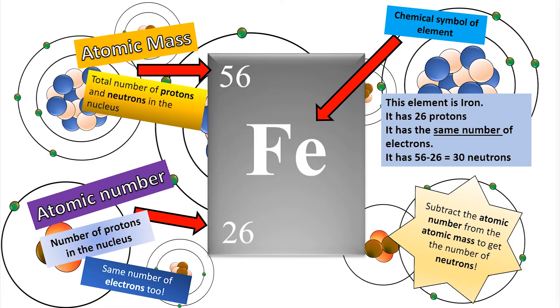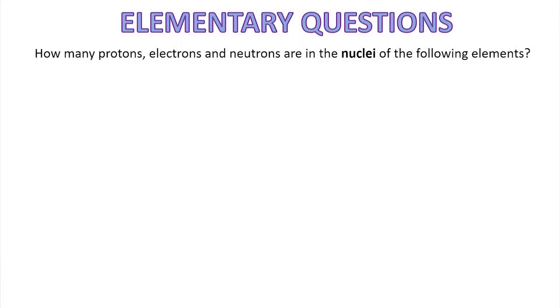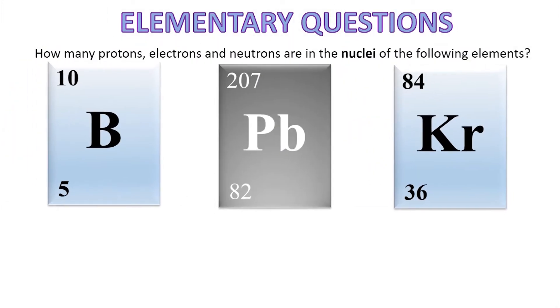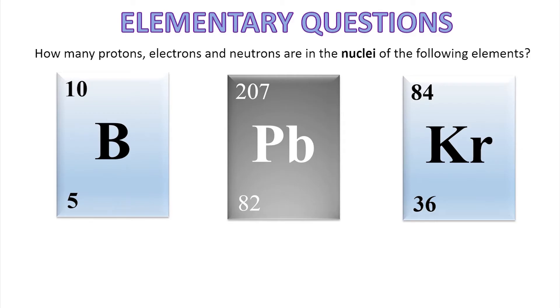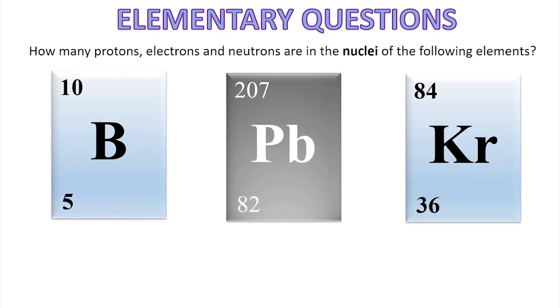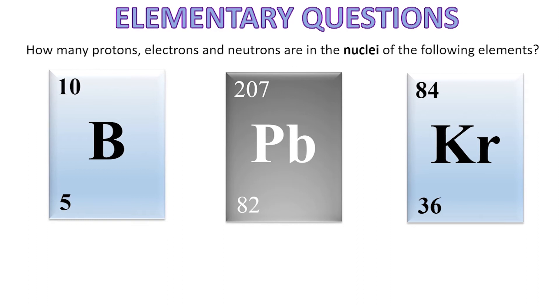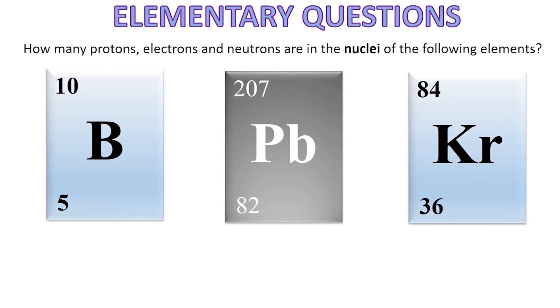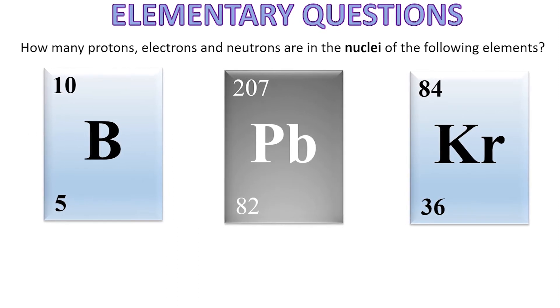Right, here's a check for me paying attention, because you probably haven't. There's some other elements. You don't need to know their names. The Pb in the middle is lead, and Kr's krypton. B is boron. But what I'm interested in, how many protons, electrons, and neutrons are those particular elements made of? Press pause if you want to. You've had your chance. Here's the answers.